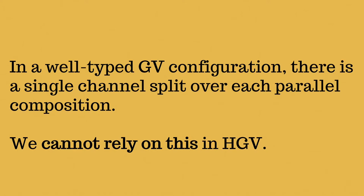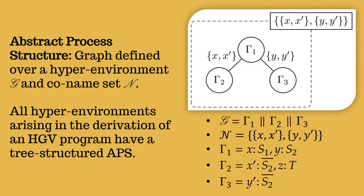However, proving progress requires a bit of thought. So although GV's requirement that each parallel composition splits a single channel is restrictive, it's also quite a powerful reasoning tool, and we can't use that in HGV. So instead, we introduce abstract process structures, which are graphs defined over hyper-environments.